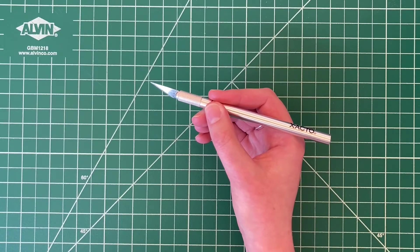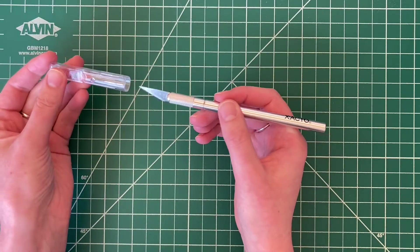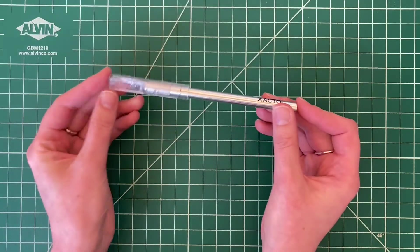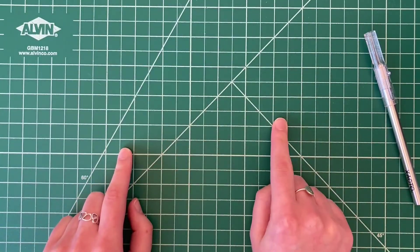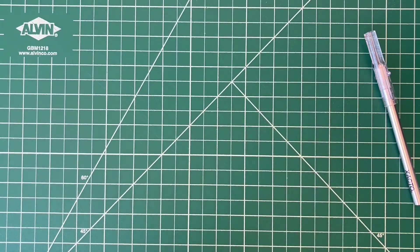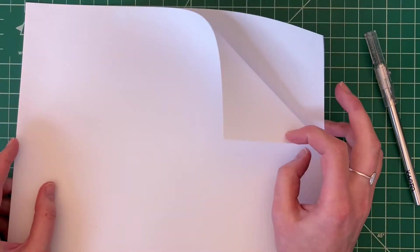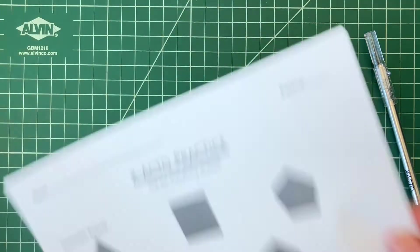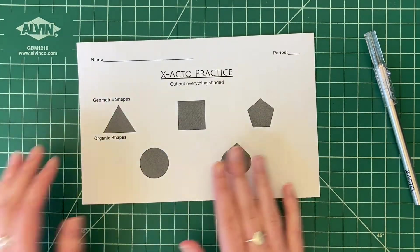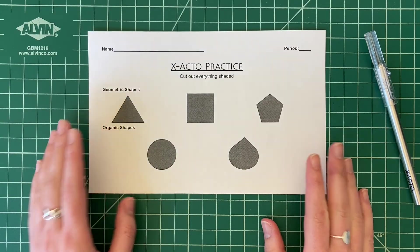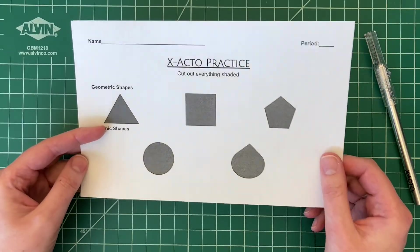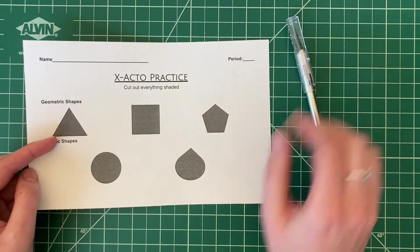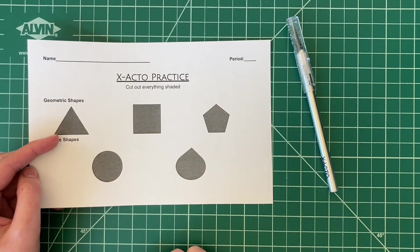For this lesson you will need an X-Acto knife. There is a checkout process so you're going to need to come see me to get one of these. You will also need a cutting board, we're going to call this a self-healing mat. You will need some blank white paper to practice on, and at the end you're also going to need to pick this up. This is our X-Acto practice sheet. When you complete this sheet, you'll be able to turn this in for your approval to move forward using this tool in our classroom.